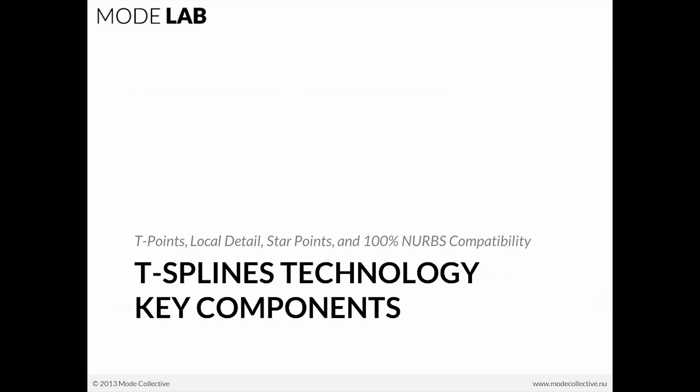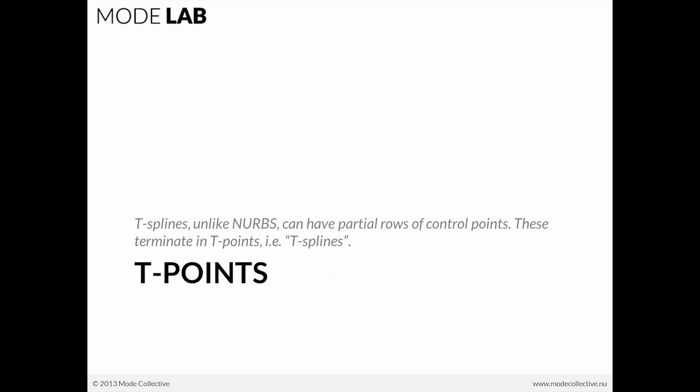So the key components behind T-Splines technology are T-Points, local detail, star points, and 100% NURBS compatibility. T-Splines, unlike NURBS, can have partial rows of control points. These terminate in T-Points. That's where the name comes from, T-Splines.